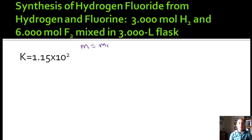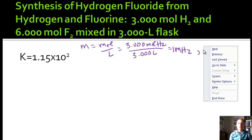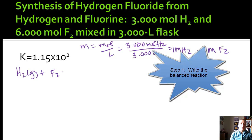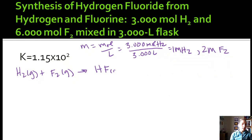We know molarity is moles per liter. So we're going to take our three moles of H2 divided by our three liters. So we get one molar of H2. We do the same process with the F2. It's six over three, and so we get two molar of F2. All right, let's write our equation. So we're synthesizing hydrogen fluoride. That means we're forming it. So we want to take H2 as a gas plus F2 as a gas and produce hydrogen fluoride.